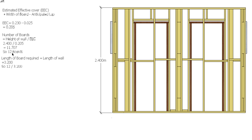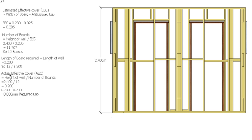We know we need 12 boards, but we need to get them on the wall evenly. So my anticipated lap of 25mm is not going to work — I have to work a new lap out and therefore a new effective cover. My actual effective cover is going to be the height of the wall divided by the number of boards. My wall is 2.4m high and I'm going to use 12 boards, so that means I'm going to have an effective cover of 200mm.